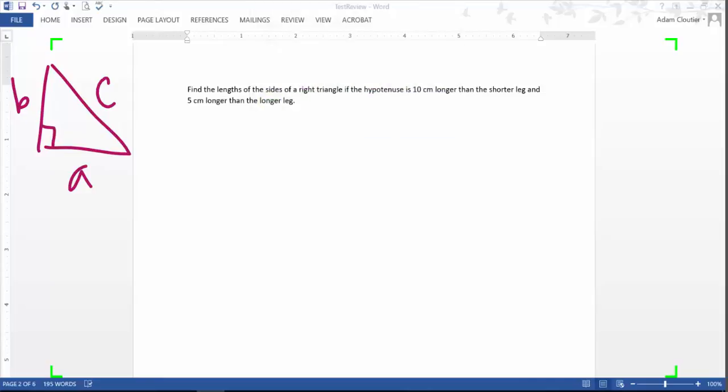Now right off the bat, be careful because it's saying the hypotenuse is and the hypotenuse is. So it's really comparing the hypotenuse to the shorter leg and the longer leg. So what I want to do is flip it around. So rather than saying hypotenuse is 10 centimeters longer than the shorter, I want to flip this around and say shorter is equal to hypotenuse minus 10.